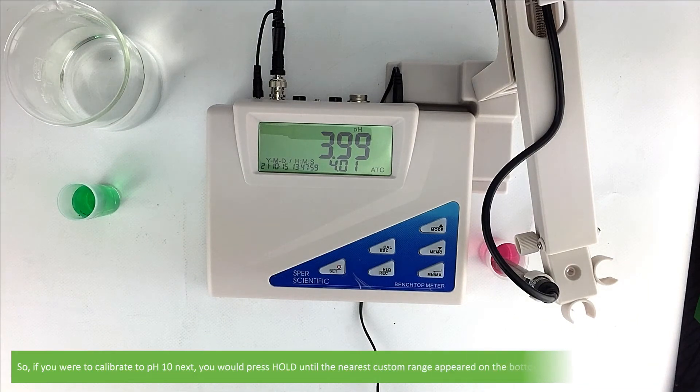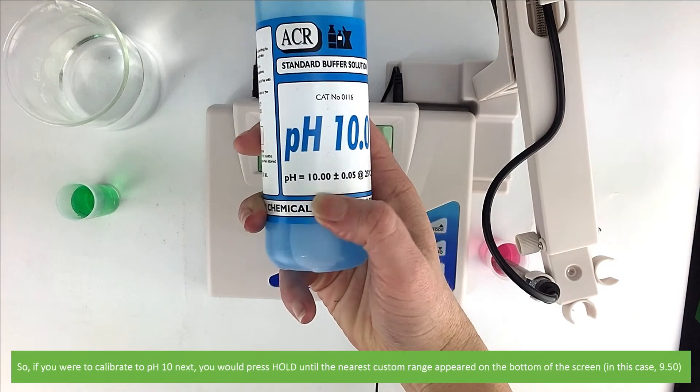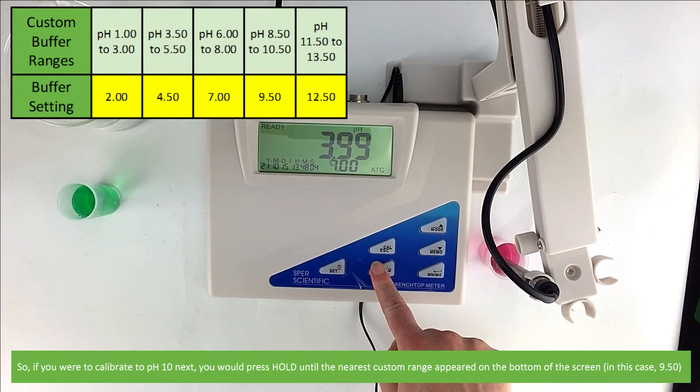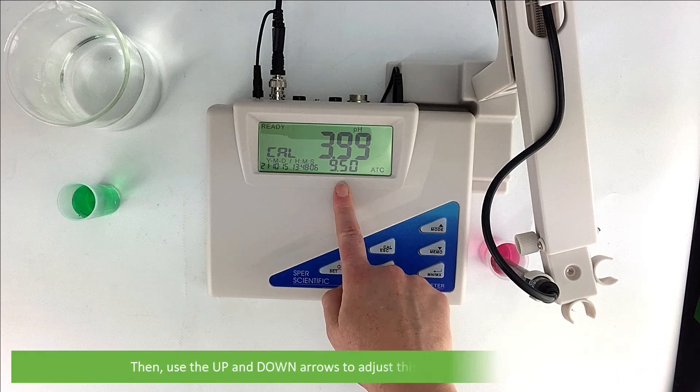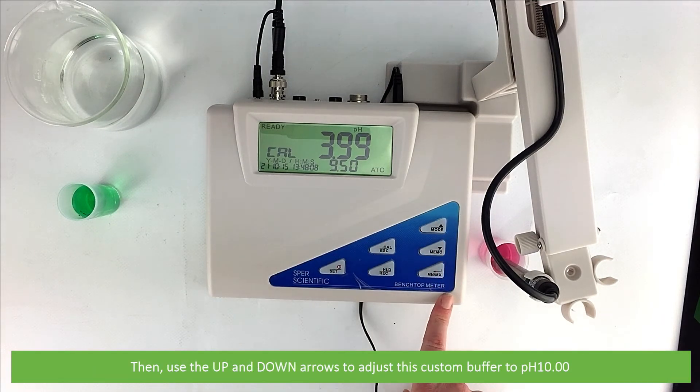So, if you were to calibrate to pH 10 next, you would press hold until the nearest custom range appeared on the bottom of the screen. In this case, it would be 9.5. Then, you would use the up and down arrows to adjust this custom buffer to pH 10.